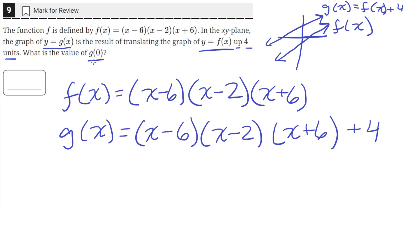Okay, so now we can find the value of g(0), now that we have the equation for g(x). So g(0) is just the value of g(x) when x is equal to 0. So 0 minus 6 is just negative 6. 0 minus 2 is just negative 2. And then 0 plus 6 is just 6.